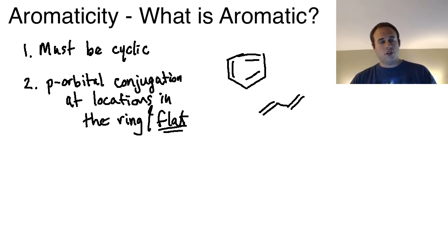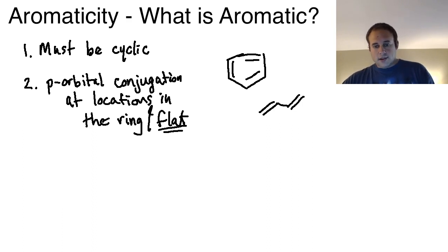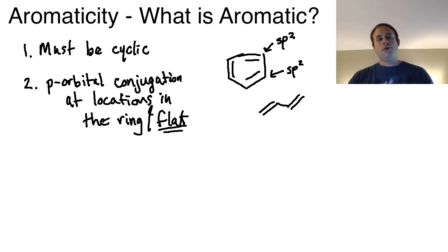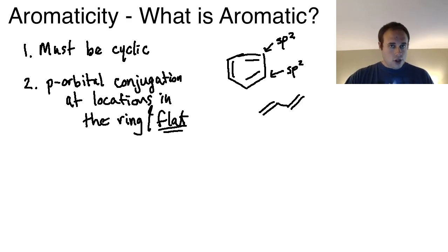There are a few exceptions to the planarity rule that we'll cover later, but in general that's the assumption. For instance, benzene has every single carbon involved in a pi bond, making every carbon sp2. Remember, sp2 hybridization is trigonal planar — trigonal meaning triangular, planar meaning flat — so when all positions around the ring are sp2, the entire ring should be flat in nature.